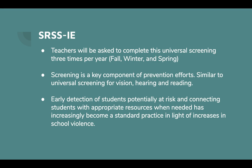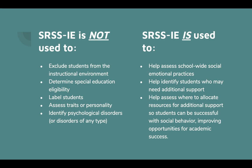Early detection of students potentially at risk and connecting students with appropriate resources when needed has increasingly become a standard practice in light of increases in school violence. The SRSS is not used to exclude students from the instructional environment, to determine special education eligibility, label students, assess traits or personality, or identify psychological disorders. It is used to help assess school-wide social-emotional practices, to help identify students who may need additional support, and to help assess where to allocate resources so students can be successful with social behavior, improving opportunities for academic success.